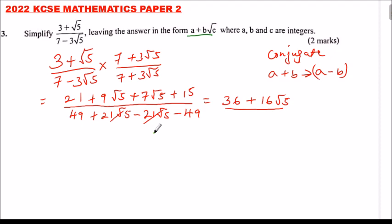This is supposed to be 45. Let's change that, because we have multiplied 3 times 3 is 9, then √5 times √5 is 5, so 9 times 5 is 45. This is going to give us 4.